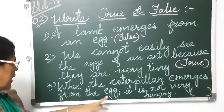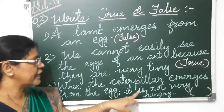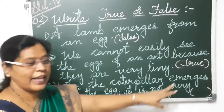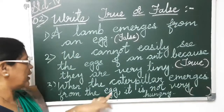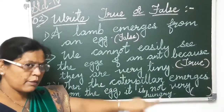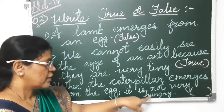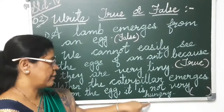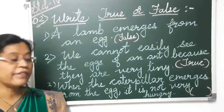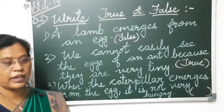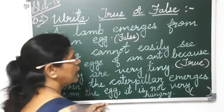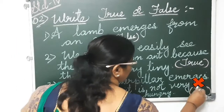The third one: when the caterpillar emerges from the egg, it is not very hungry. The caterpillar emerges, meaning it comes out of the egg. It is not very hungry — that is a wrong statement. When the caterpillar emerges from an egg, it feels very hungry. So the third one is also false.